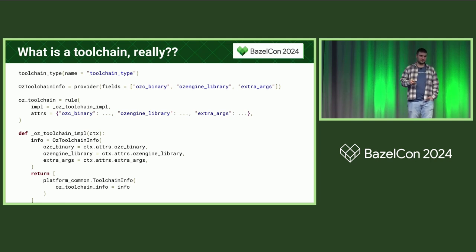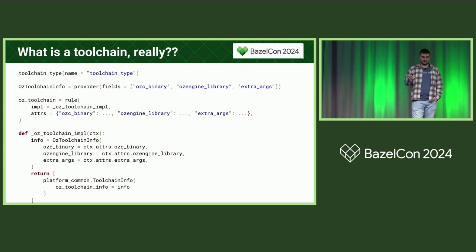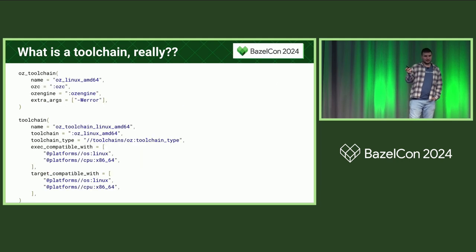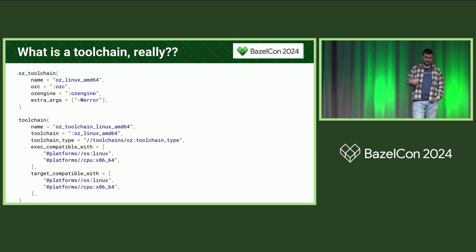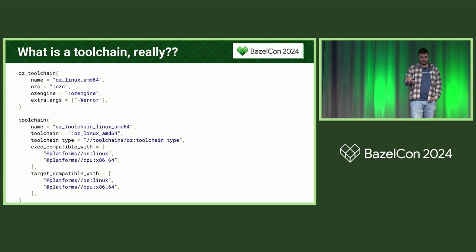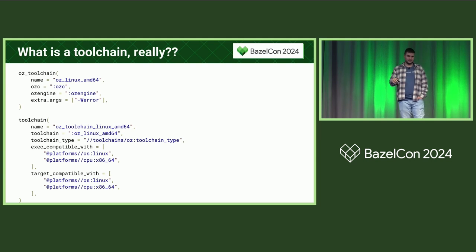You have a standard rule that takes any flags you want and has an implementation function. Most importantly, it returns a toolchain info provider that wraps your custom provider with whatever fields you want. Then to actually instantiate a toolchain of this type, you call your custom rule — and you can do this as many times as you want for any toolchain you want to define. In this case, it's one for Linux AMD64, using the attributes you declared previously.